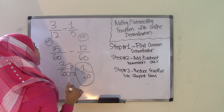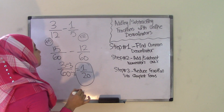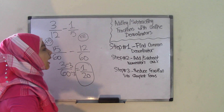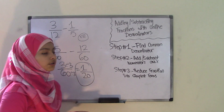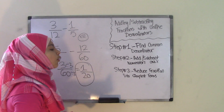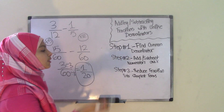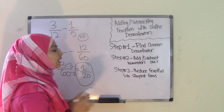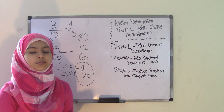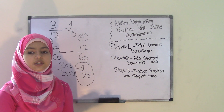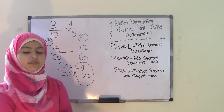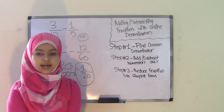That means 3 twelfths minus 1 fifth equals 1 over 20. So that's how you add or subtract fractions with unlike denominators. I hope you guys understood this topic. Remember, it's only these three easy steps. And also, if you get an improper fraction, always change it back into a mixed number. We'll see you guys next time. Bye!